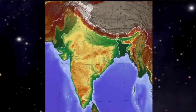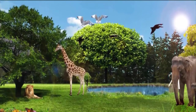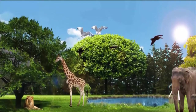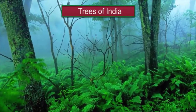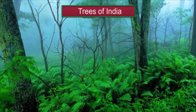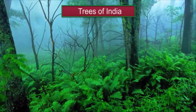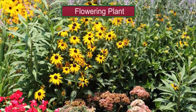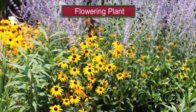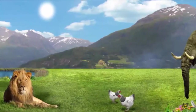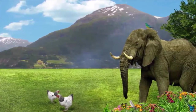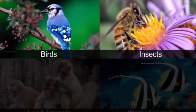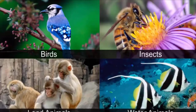India has a rich biodiversity and is home to around 1.6 million, or nearly eight percent, of all the species of flora and fauna found in the world. India is home to around 47,000 species of flora, ranging from tiny ferns to lofty trees. Around 15,000 species of flowering plants are indigenous to India. India is also home to over 81,000 species of fauna, including birds, insects, and land and water animals.